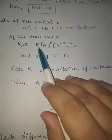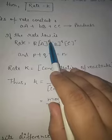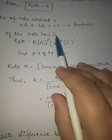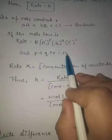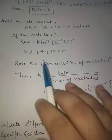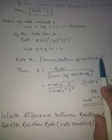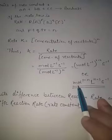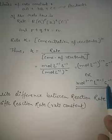For the rate law: rate = K[A]^p [B]^q [C]^r, the sum P + Q + R equals N, which is called the order of the reaction — this will be studied in our next topic. From K = rate / [concentration]^N, the unit of the rate constant is mol^(1−N) · L^(N−1) · s⁻¹.